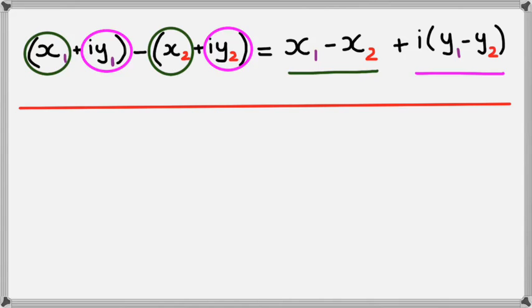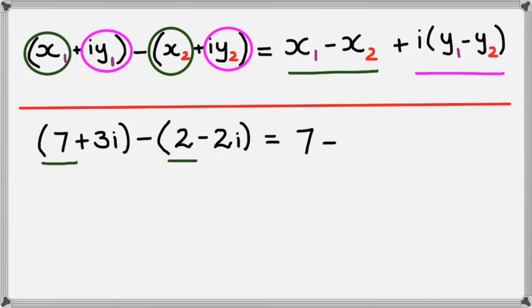Looking at an example, the example we're going to look at is 7 plus 3i minus 2 minus 2i. So as usual, we collect the real parts first, so in this case it will become 7 minus 2, which is the real part, and then we have the imaginary part.